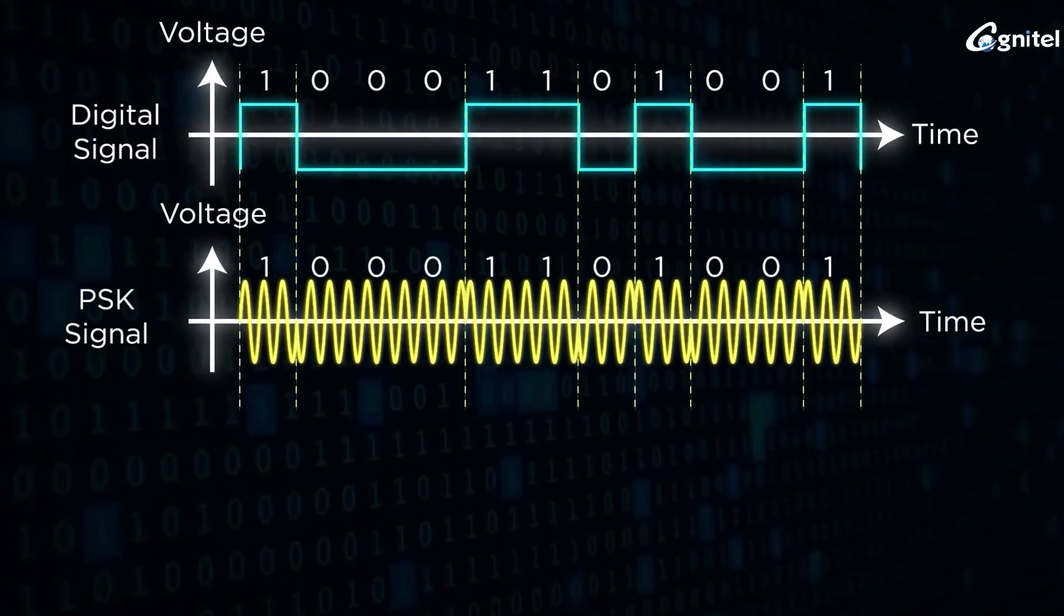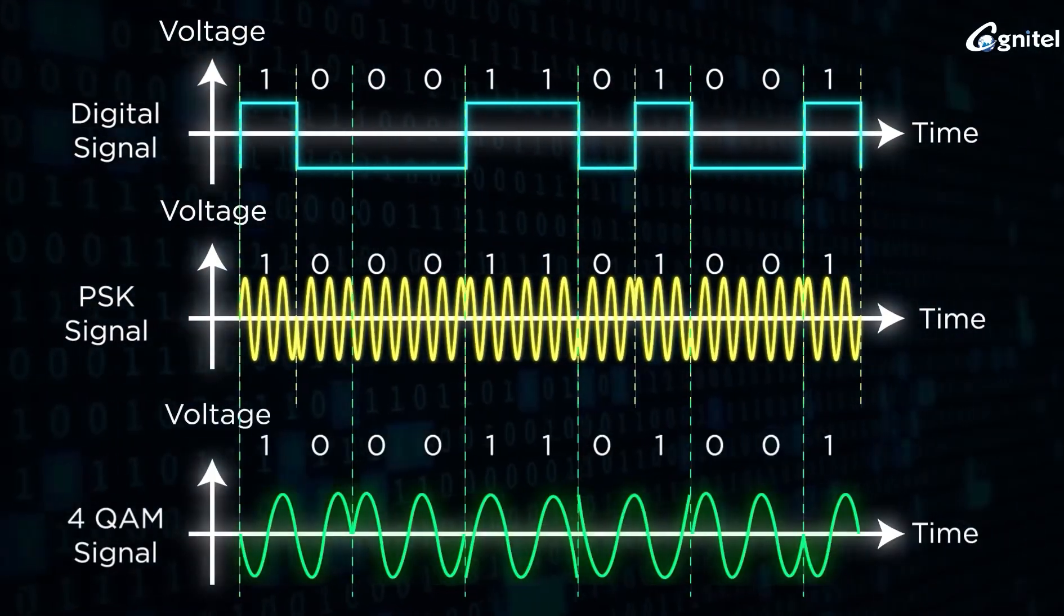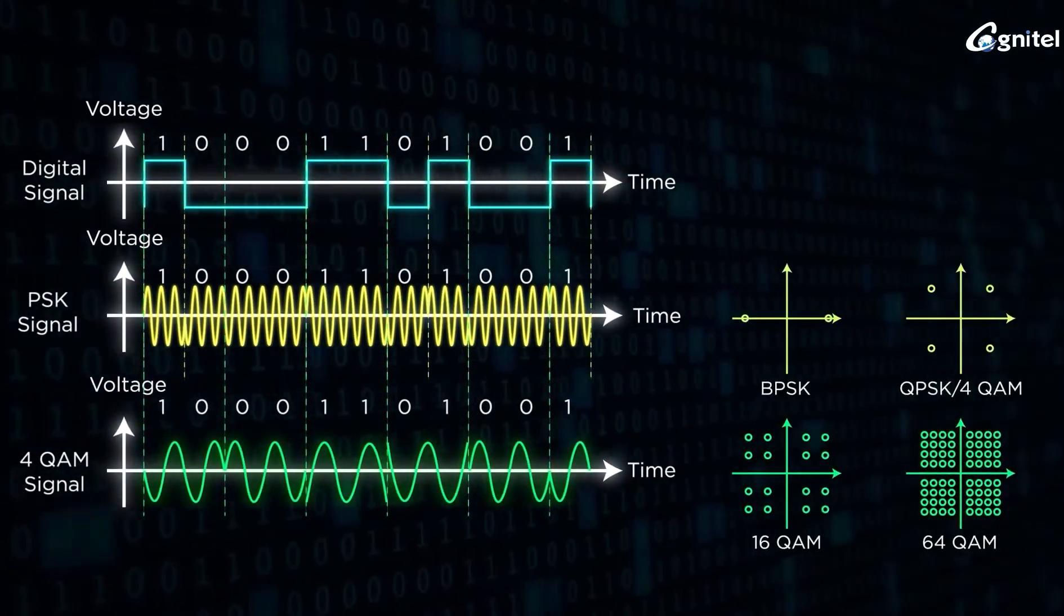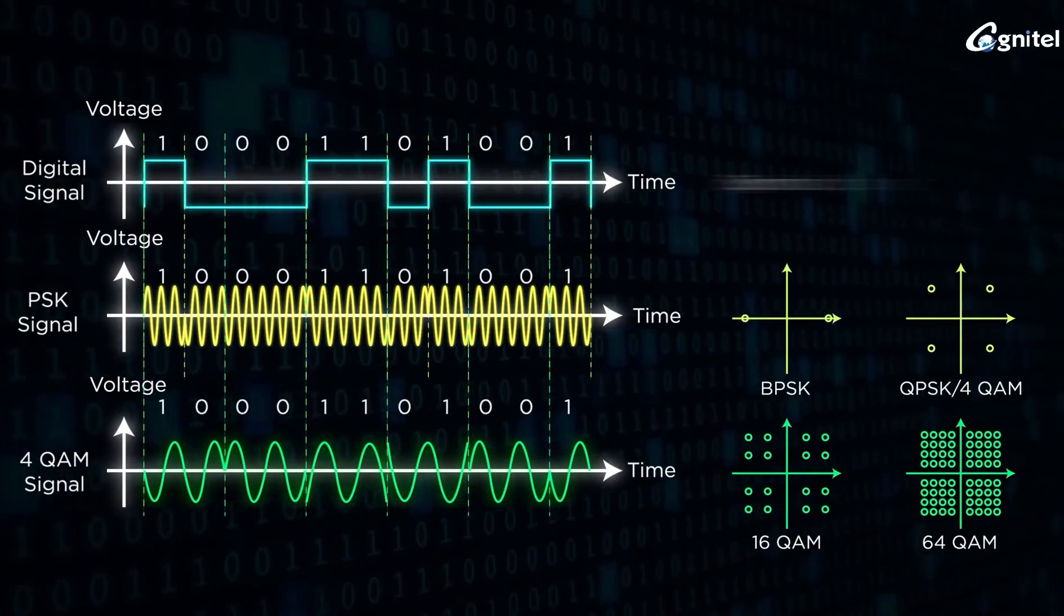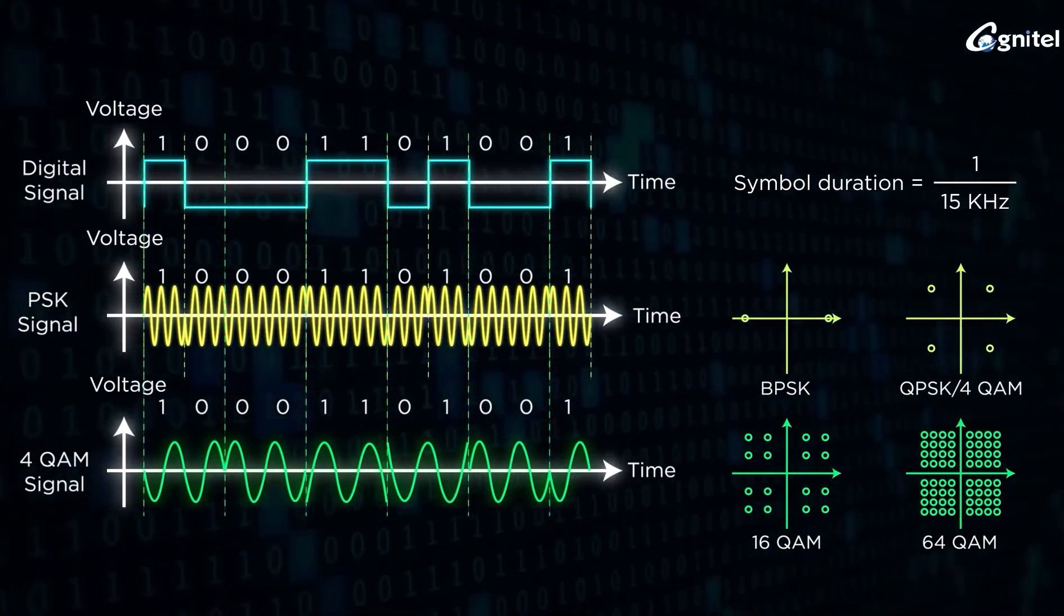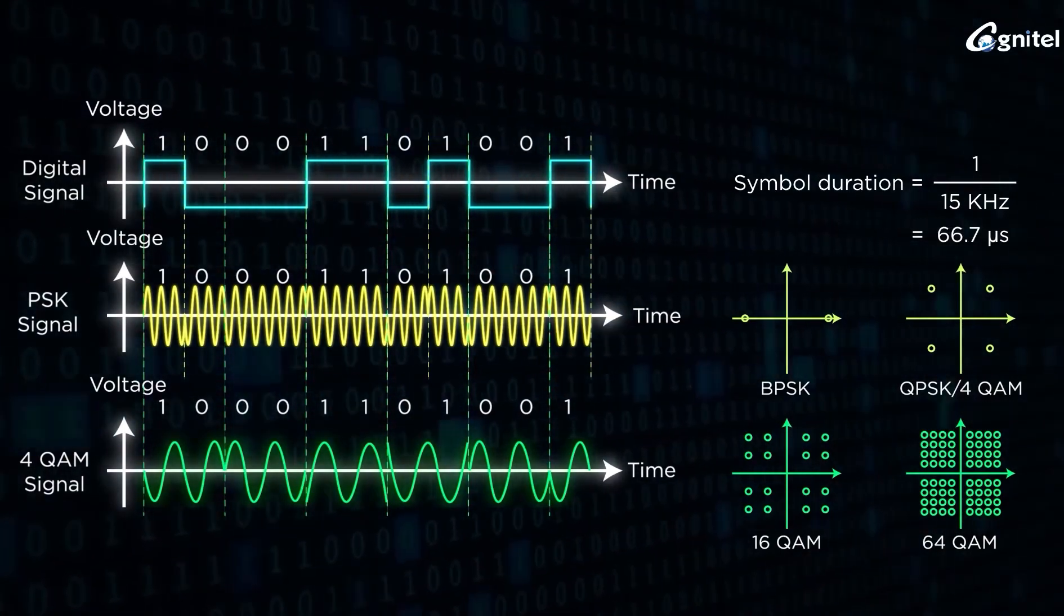The digitally encoded user data is modulated using phase shift keying (PSK) or quadrature amplitude modulation (QAM) techniques known as symbols. On time domain, symbol duration is strictly fixed at 1 divided by 15 kilohertz, which means 66.7 microseconds.